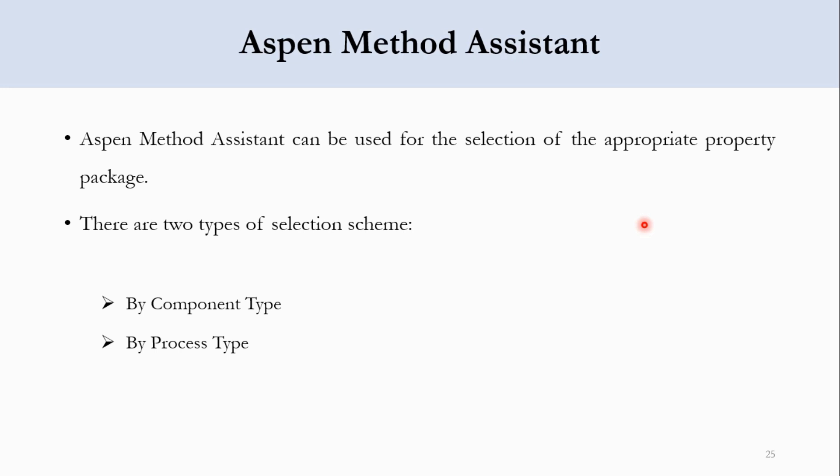There are two types of selection schemes: number one is by component type, and number two is by process type. Our focus today will be on how we can select a suitable property package by component type.